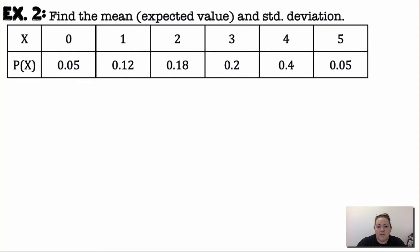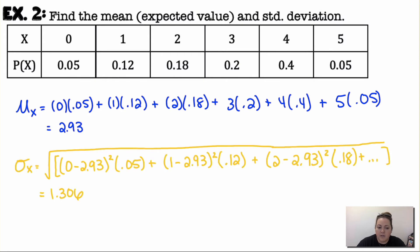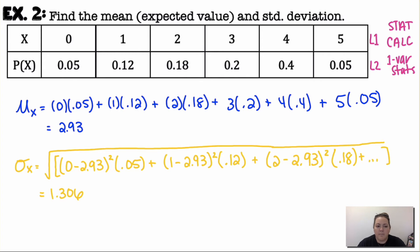To find the mean or expected value, multiply each outcome by its probability and sum them all up — you get approximately $2.93. For standard deviation, take each value minus the mean, square it, multiply by its probability, and sum. You can also enter the probability distribution into a calculator: x-values in List 1, probabilities in List 2, then STAT, CALC, 1-Var Stats with List 2 as the frequency list. Look for x-bar and sigma.